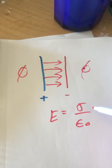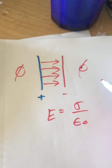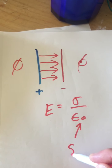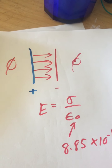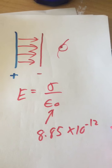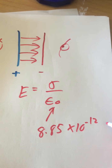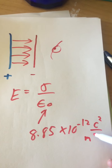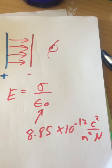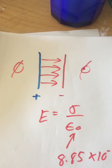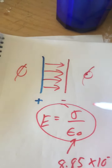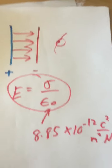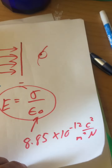Sigma is the charge density in Coulombs per square meter. You need the area of the plate and the amount of charge on the plate to calculate sigma. Epsilon zero is 8.85 times 10 to the minus 12, in Coulombs squared per meter squared newton. The electric field between the two planes is always directed from the positive to the negative — that's what defines the direction. This was on one of the quizzes, and the solutions to all the quizzes are posted.